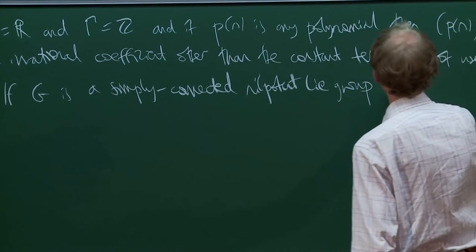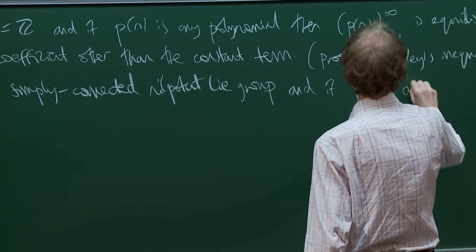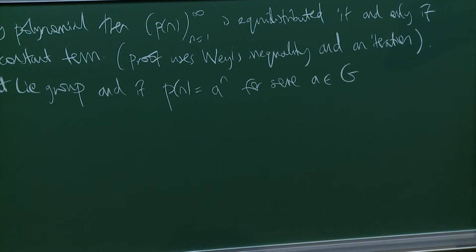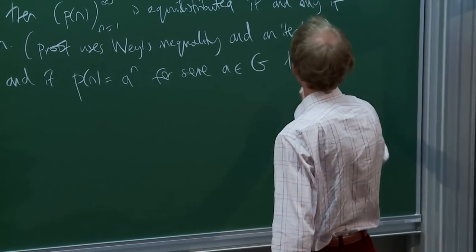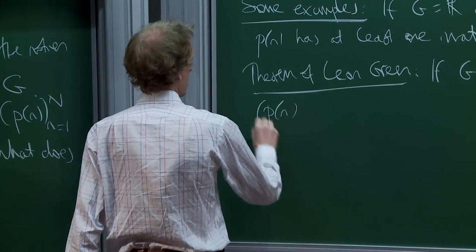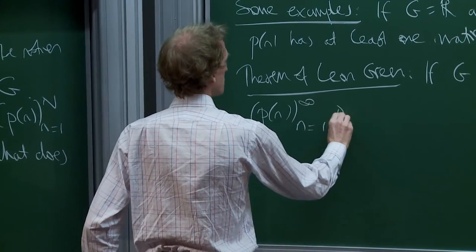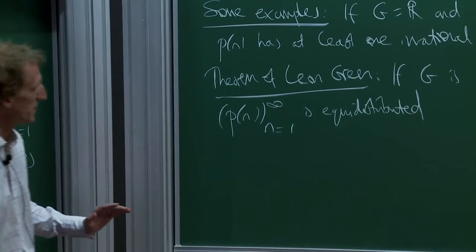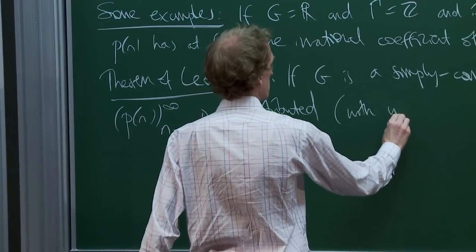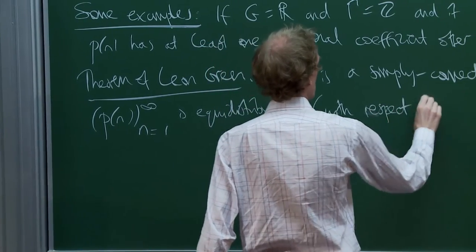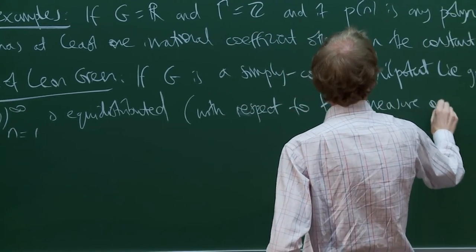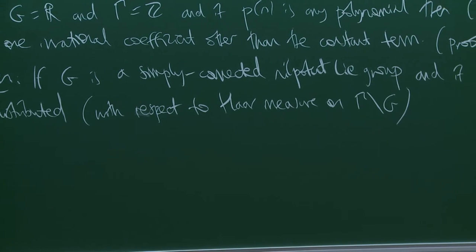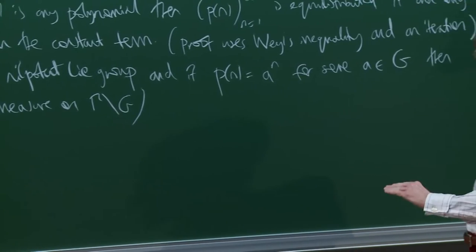...then that qualifies as a polynomial sequence with the definition I've given. The conclusion is that P(n) for n from 1 to infinity is equidistributed with respect to the Haar measure on G mod gamma if and only if the only way a sequence can fail to be equidistributed is if it fails to be equidistributed in an abelian projection of G.